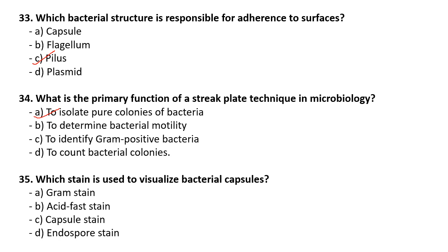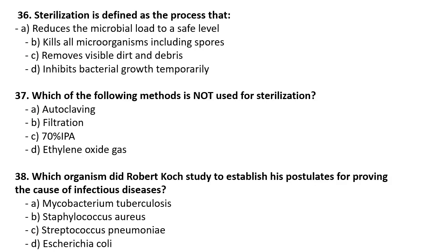Which stain is used to visualize a bacterial capsule? We do capsule staining. Sterilization is defined as the process that kills all microorganisms including spores. Which of the following is not used for sterilization? The correct option is 70% IPA — we use 70% isopropyl alcohol for disinfection. For media and glassware we use an autoclave; for heat-labile solutions we do filtration; and for some medical instruments ethylene oxide gas is used for sterilization.